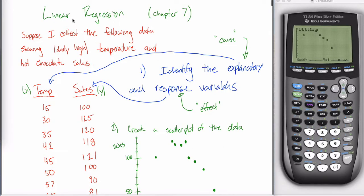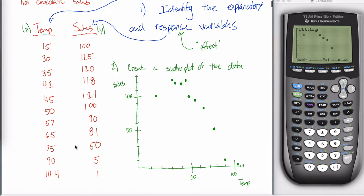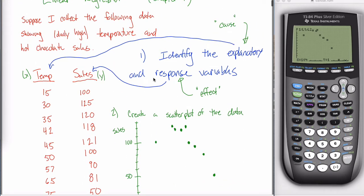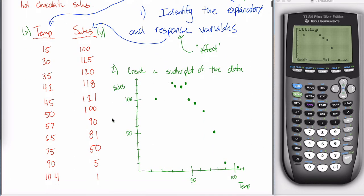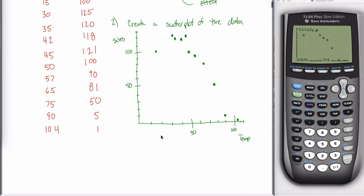In this video we continue our exploration of linear regression, sticking with the same example where we grabbed 11 days at random at a kid's hot chocolate stand and tracked the daily high temperature and how many cups of hot chocolate were sold. We determined the explanatory variable — the cause — was temperature, and the response variable — the effect — was sales. We created a scatterplot, and the concept of this video is correlation.